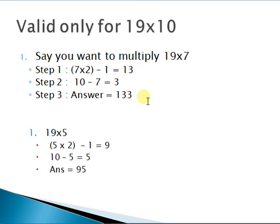Other example, 19 into 5. 5 into 2, that is 10, minus 1 will be 9. 10 minus 5 is equal to 5. Put 5 over here, your answer is 95.